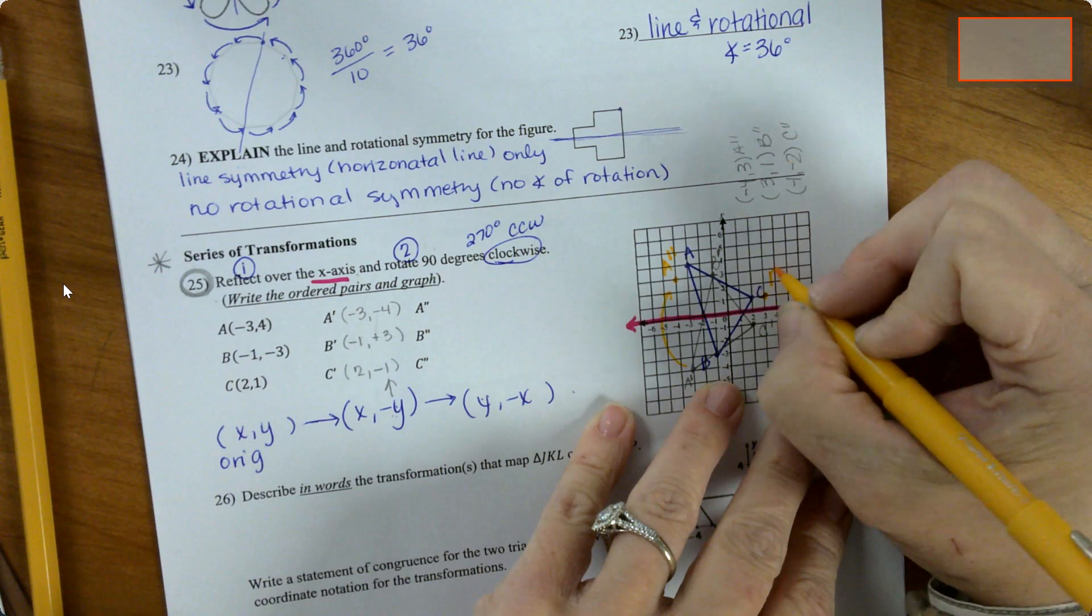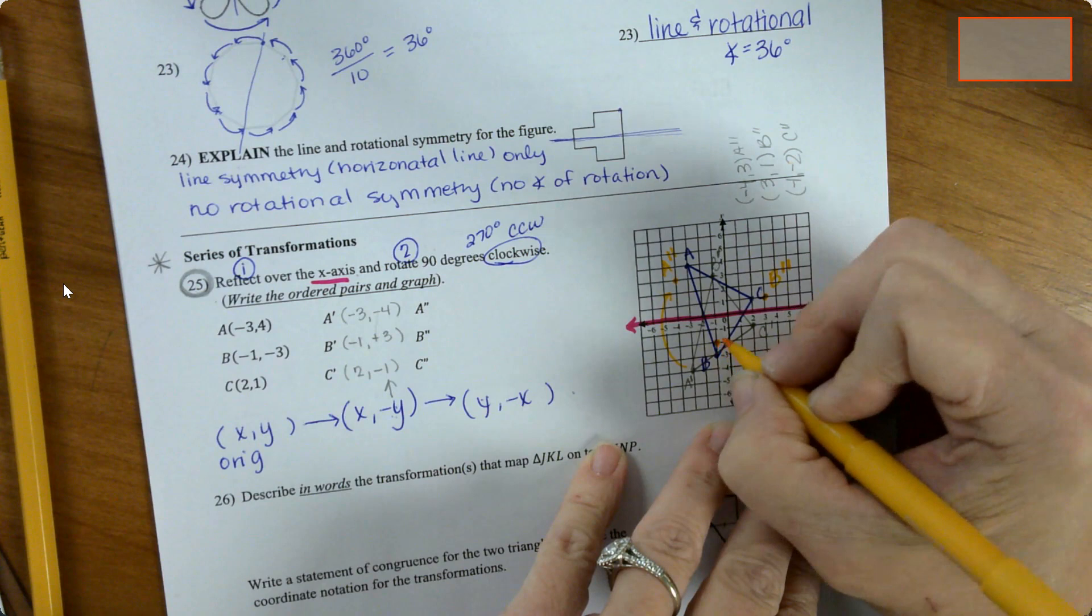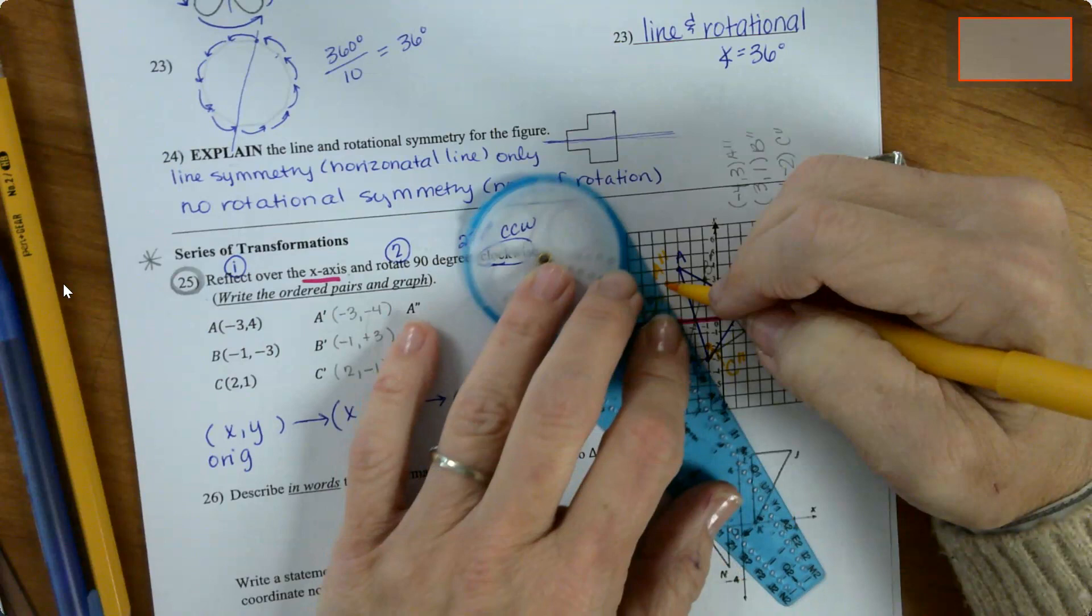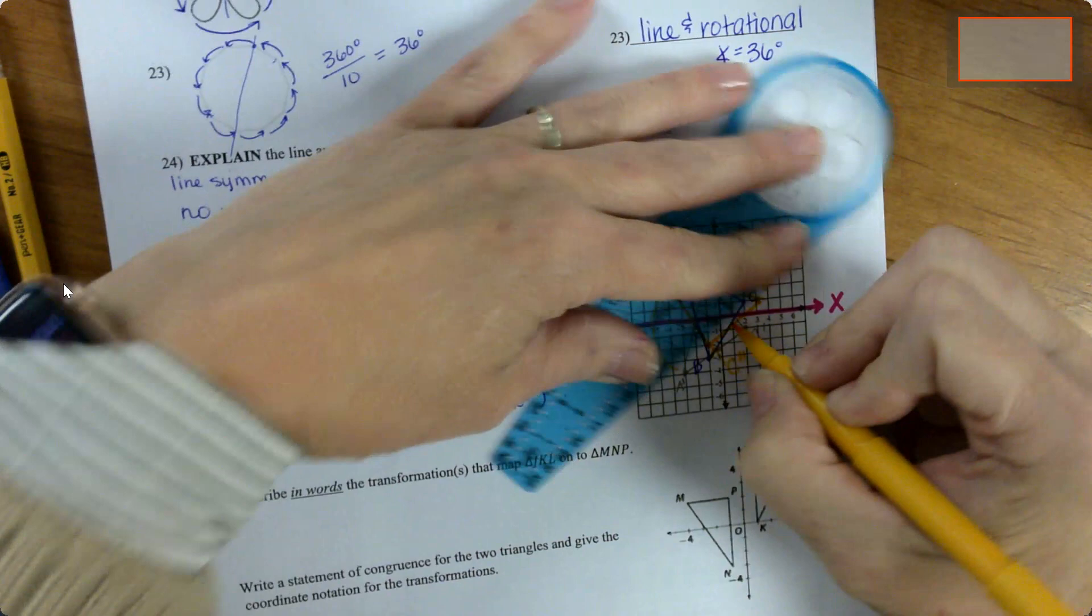And so this yellow one is the actual final location. So this second one became the third one, and we already had that answer. So negative 4, 3, 3, 1, and negative 1, negative 2.